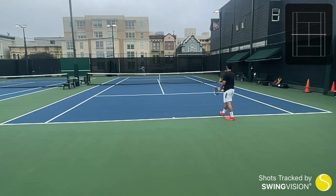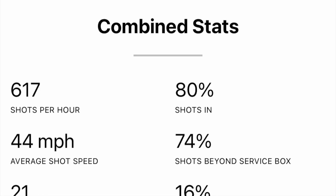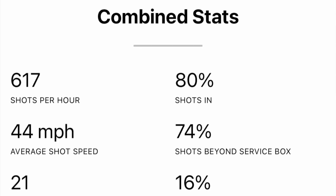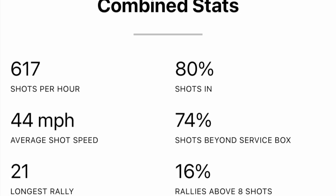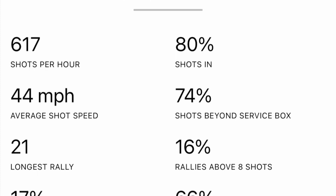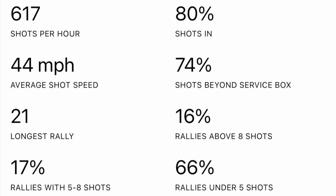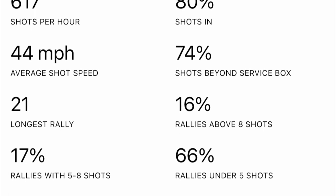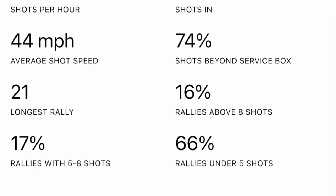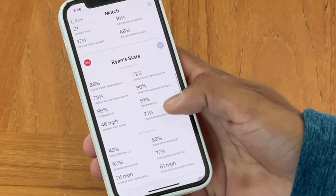We'll take a look at the stats and heat maps from this match between Ryan and Darren. The app shows combined stats for both players: shots per hour, percent of shots in across both players, shot speed, shots beyond the service line that measures depth, and a few stats around rally length — the longest rally the players had, as well as the percentage of rallies under five shots, between five and eight shots, and above eight shots. Below that, you have stats broken out individually for each player.